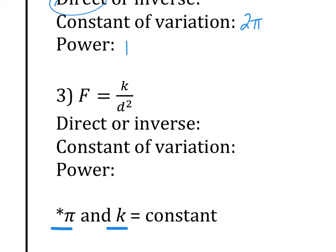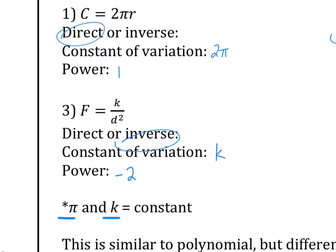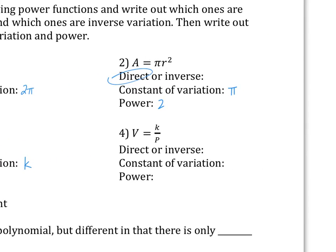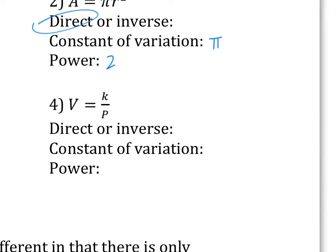Blake, number three — is this direct or inverse? Inverse. Yes. Sally, what is the constant of variation? Evan, what is the power? Two — no. One — no. One over two — no. Negative two — yes, negative two. You have to change that into a numerator. Davis, number four — direct or inverse? Inverse. Iris, constant of variation. And last one, Amelia, power is — yes.